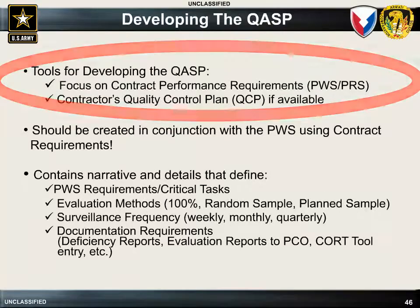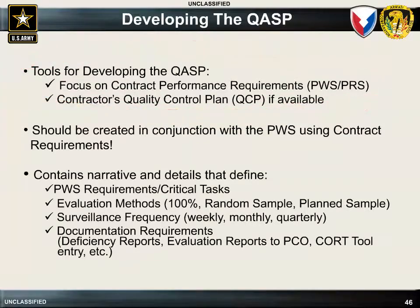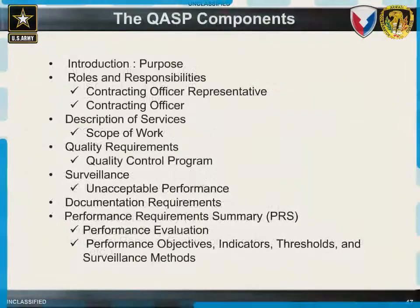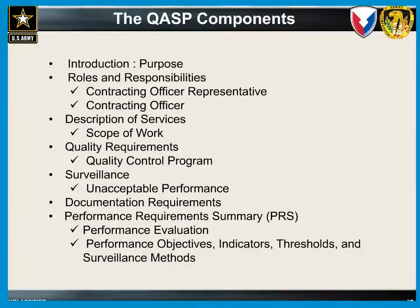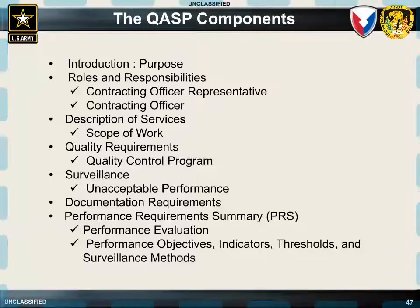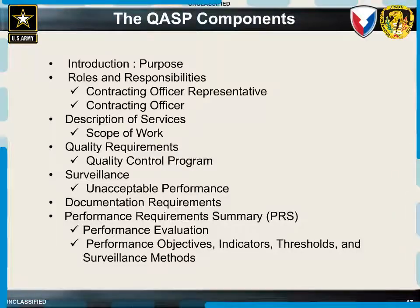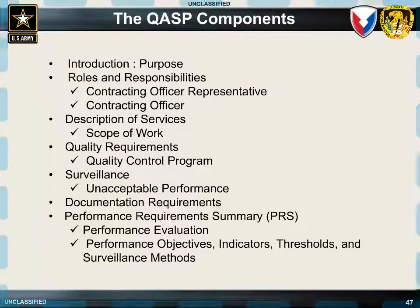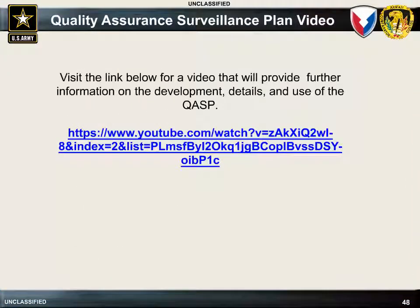When developing the QASP, focus on the contractor's performance requirements and the contractor's quality control plan, if applicable. The QASP should detail the critical tasks to be evaluated and the frequency of the evaluations, along with the surveillance methods to be used. The COR's documentation requirements should also be addressed. The components listed here should be included in the QASP to provide a complete understanding of the details involved in the government's oversight of the contractor's performance on the contract. Be sure to capture each component when creating the QASP. Please click on the link shown on the slide to view a video that provides complete information on the development, details, and use of the QASP.